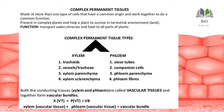Xylem is made up of four types of cells: tracheids, vessels, xylem parenchyma, and xylem fibers. Xylem parenchyma has the same basic role as regular parenchyma but is named for its location within xylem. The main distinct cell types in xylem are tracheids and vessels. In phloem, the four components are sieve tubes, companion cells, phloem parenchyma, and phloem fibers.